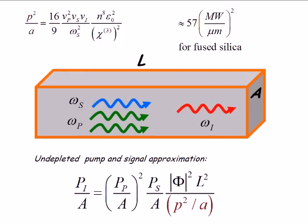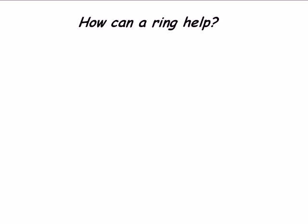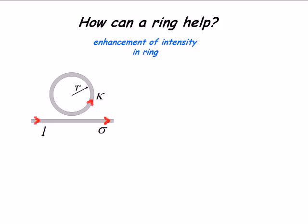How can a ring help? That's just a channel. What is a ring going to do? Well, we get an enhancement of intensity in the ring. The way that's usually described is a simple model where, if I have a field of amplitude one coming along here,